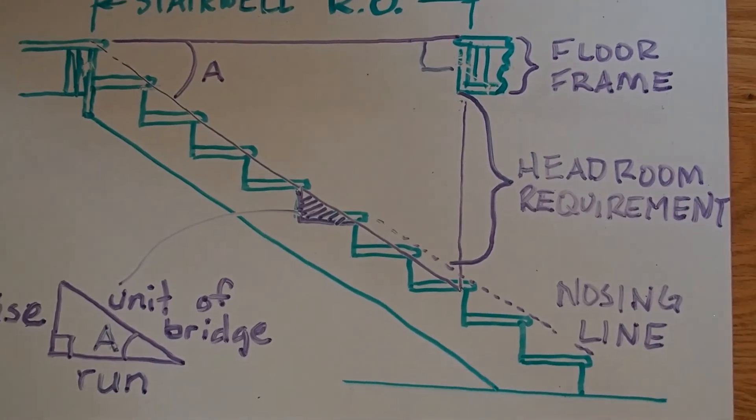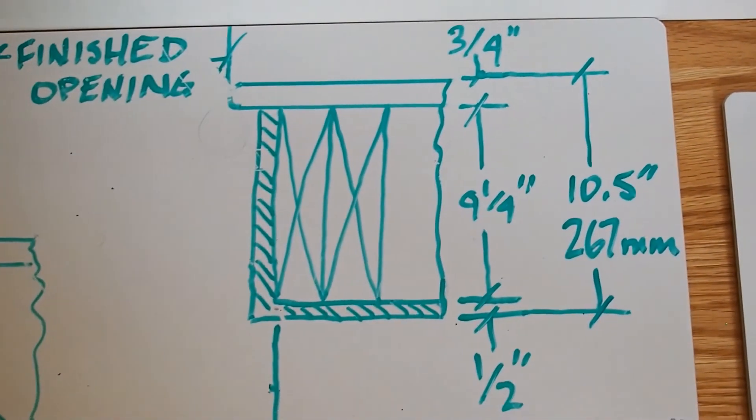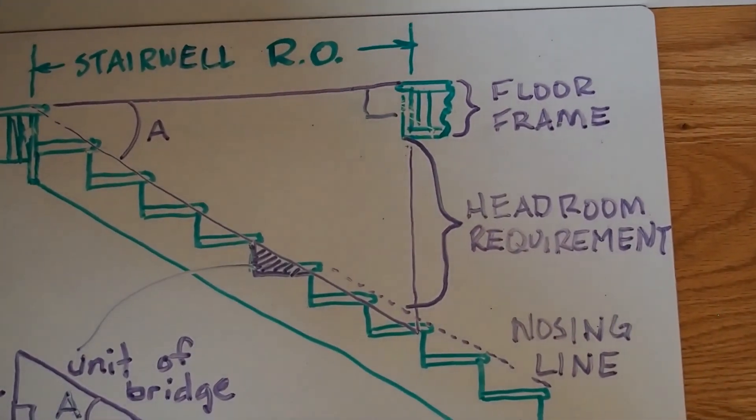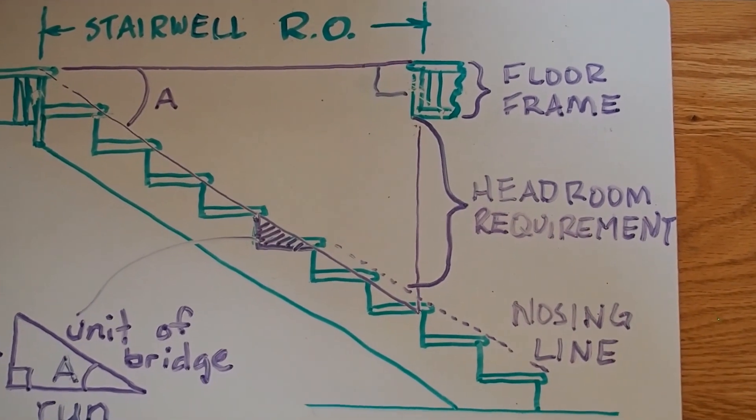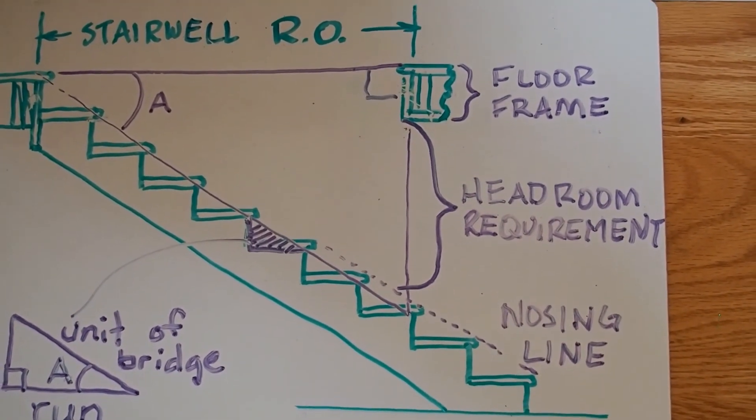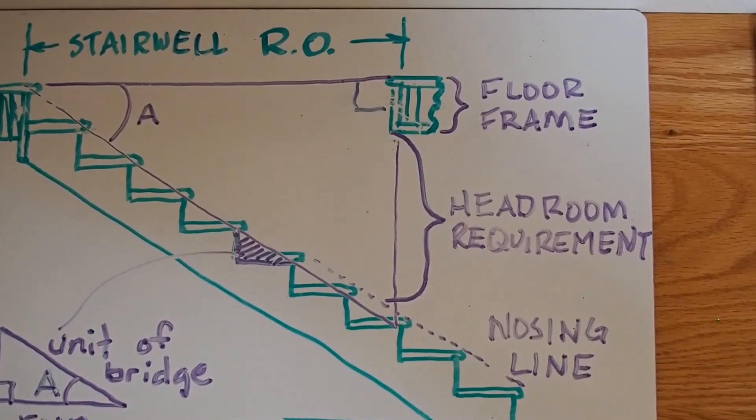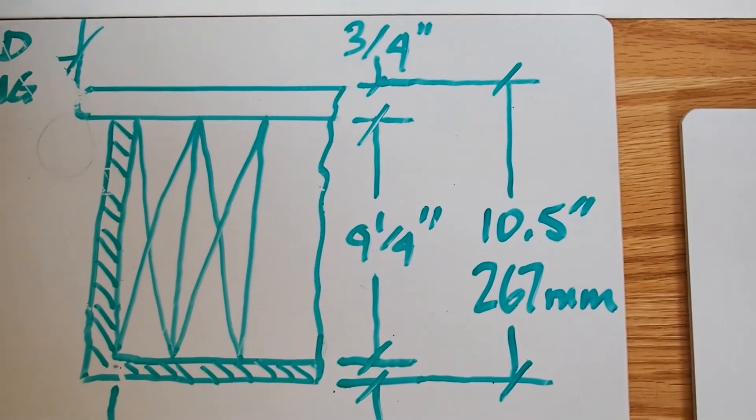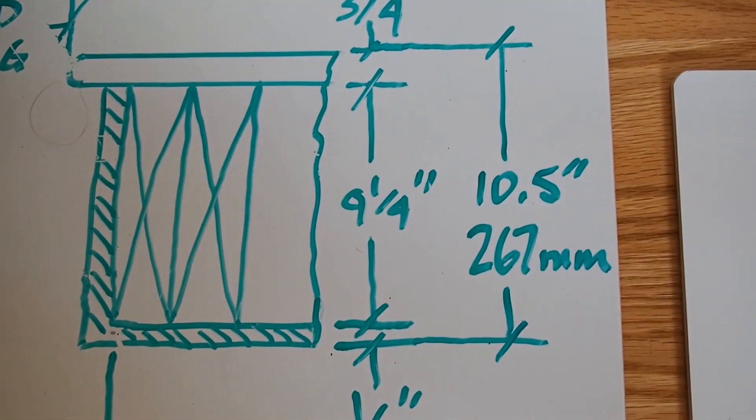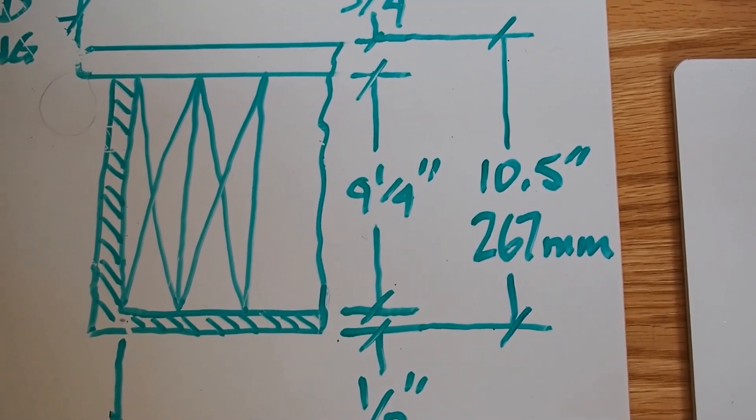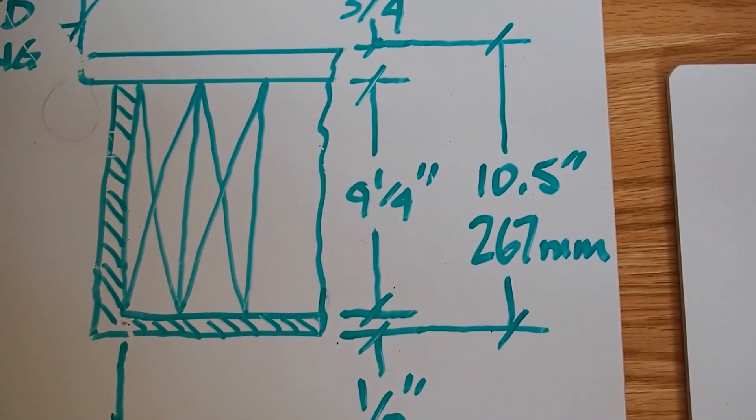Okay, so let's do this problem right here with these dimensions for our floor frame. So let's pretend these are private stairs. That means the headroom requirement is 1950 millimeters. I'm going to do this one in metric. And here's my floor frame. And it says that 10.5 inches is equivalent to 267 millimeters.